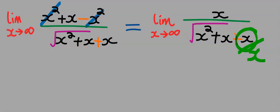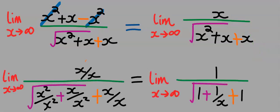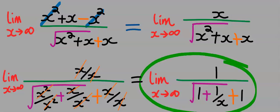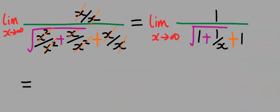Because this x — the highest power is one. Next, x will take away x, x squared will take away x squared, and this x will take away just one x. x will take away x and we are left with this remaining function. Next, I will take the limit of this function.